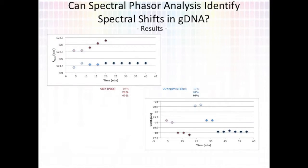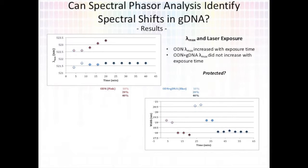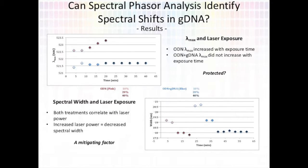I plotted the laser power and laser exposure times mainly to determine if these were going to be mitigating factors during spectral phasor analysis. For the ODN treatment, lambda max actually increased with exposure time. This was different compared to the ODN and genomic DNA treatment, where lambda max remained stable. One possibility is that in the genomic DNA treatment, the ODN was more protected from the laser exposure, while the ODN by itself was exposed to the laser. This may have increased self-annealing in the ODN treatment, which may have changed the microenvironment and in turn changed the spectral profile. Spectral width for both treatments decreased with increased laser power. These results show us that laser exposure time and laser power are both mitigating factors that need to be controlled during spectral phasor analysis.